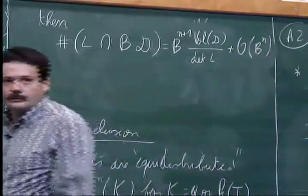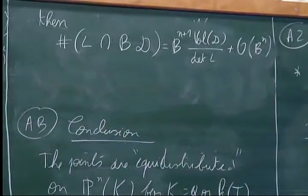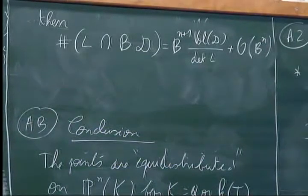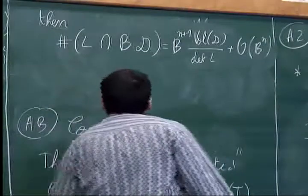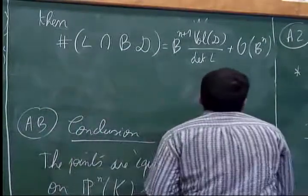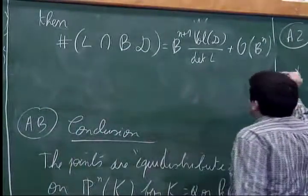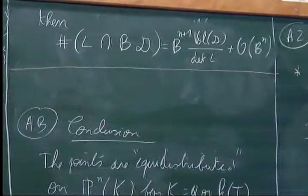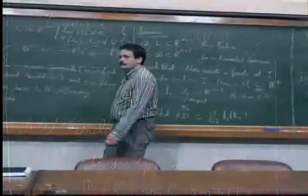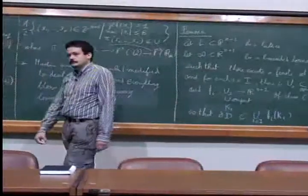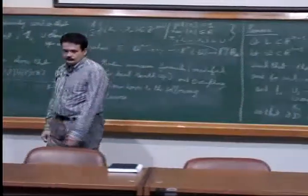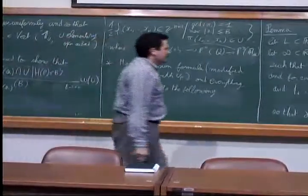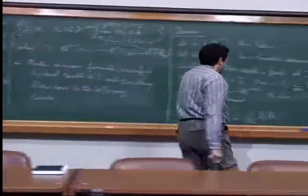Then the cardinality of the intersection of L with B times D equals B^{n+1} times the volume of D divided by the determinant of L, plus something bounded by B^n. This gives exactly what we want.